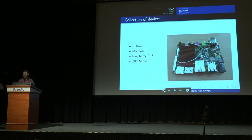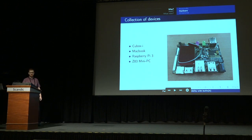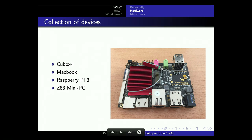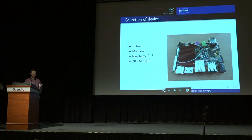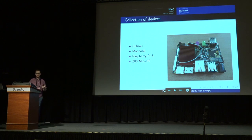I gathered a collection of devices, like the QBoxi from Solid Run, which is a tiny little cube, a MacBook, a Raspberry Pi 3, and some Intel-based mini PC. All of those machines have in common that they have a Wi-Fi chip — the Broadcom Wireless Full Mac. And I was wondering: how hard would it be to make it work?